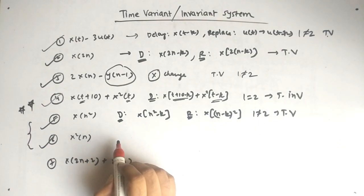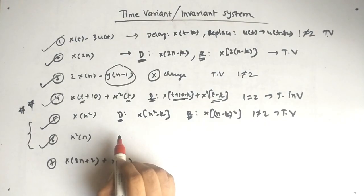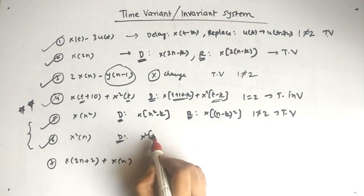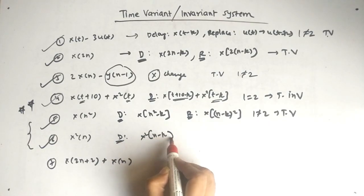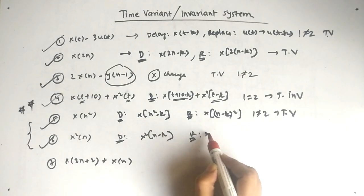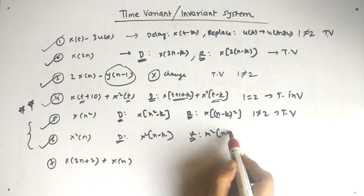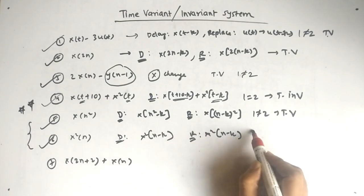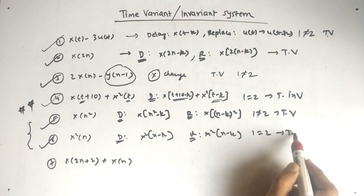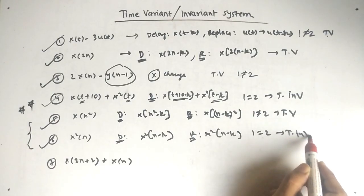Now the x²(n) part is simple. When we delay, it becomes x²(n − k). And when we replace, it is also x²(n − k). So one is equal to two — this is a time invariant system.